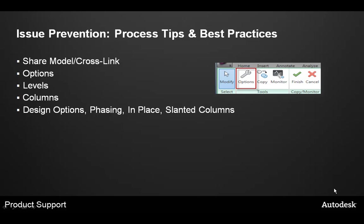Copy monitoring the architect's levels won't automatically add new corresponding floor plans to the project, so users need to add new structural and analytical plan views manually. The structural engineer has the option to split columns when copy monitoring — for example, if the architect adds columns spanning levels 1 to 4, the engineer should split the columns at each level to avoid analytical model problems. Note that design options, phasing, in-place geometry, and slanted columns are beyond the scope of copy monitor functionality and will not function correctly.